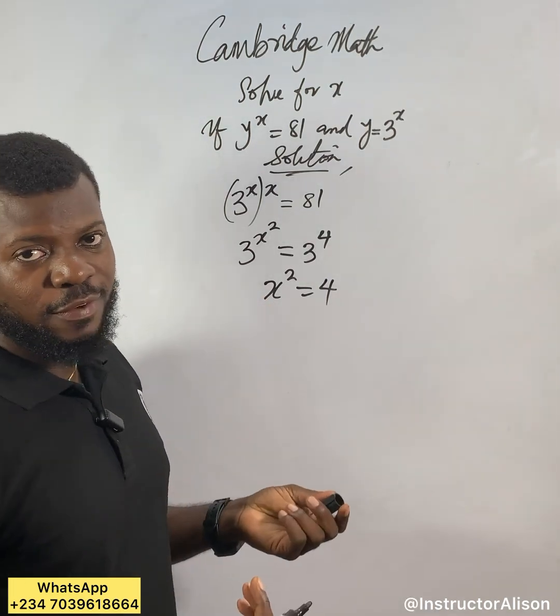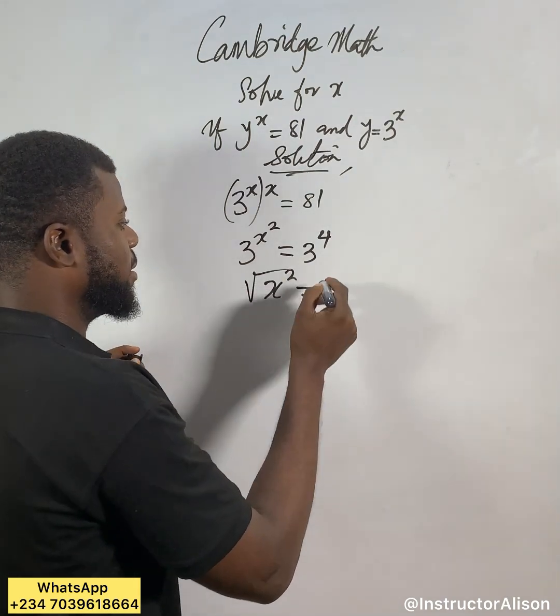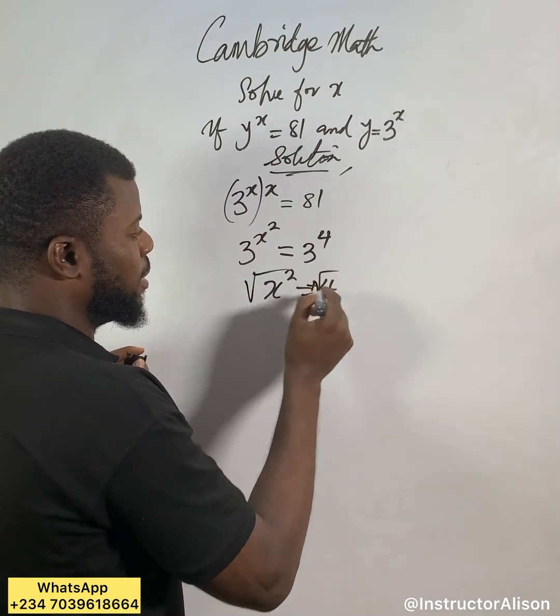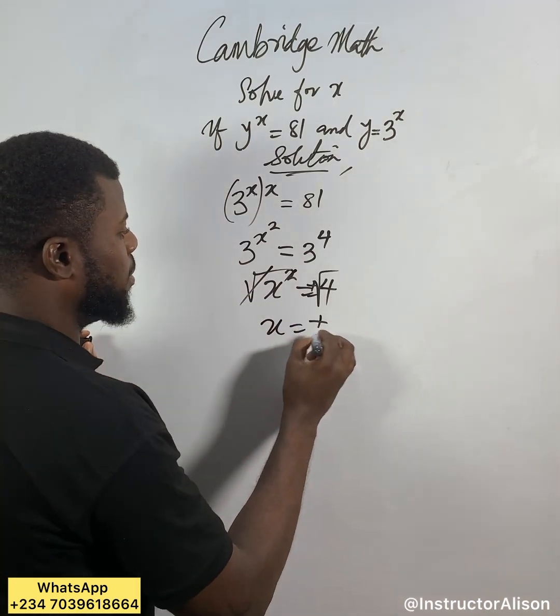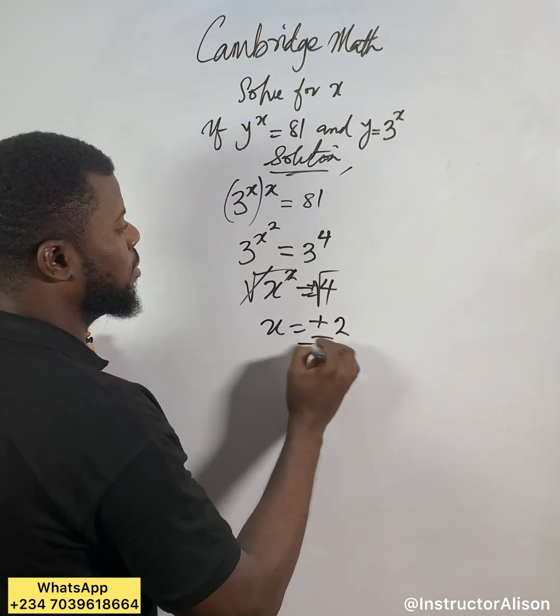If you take square root of both sides, this will go with plus or minus, and the square will cancel. So x now will equal to plus or minus the square root of 4.